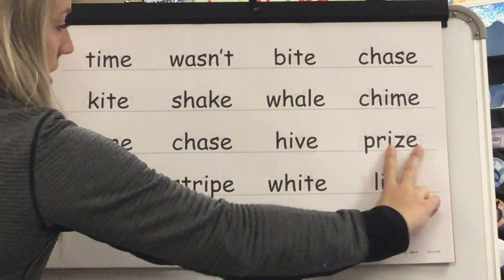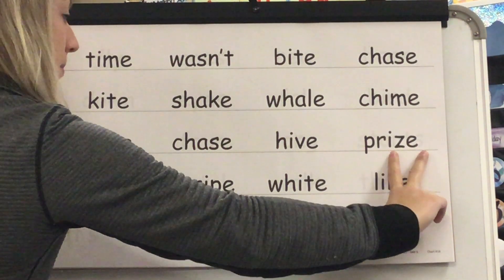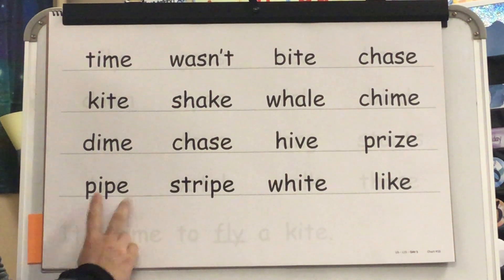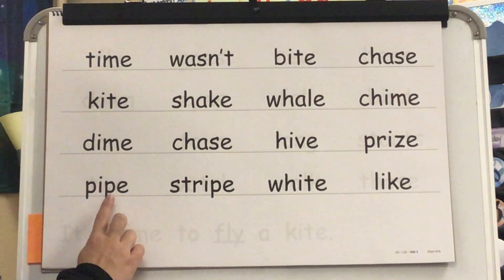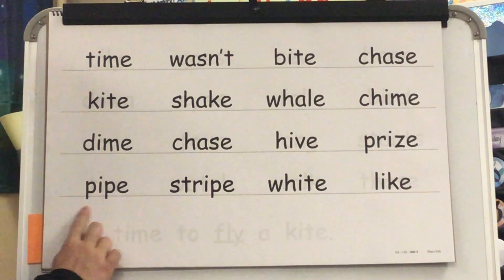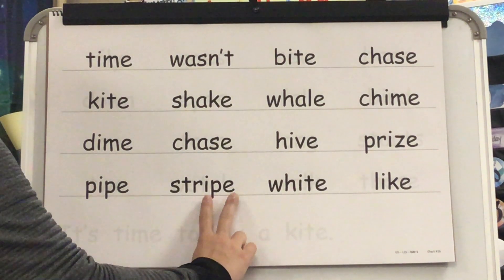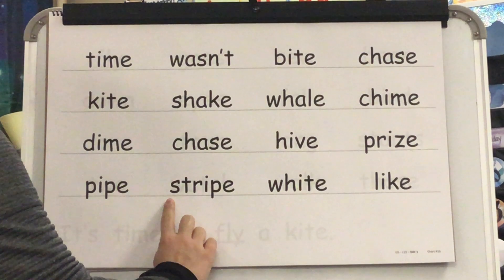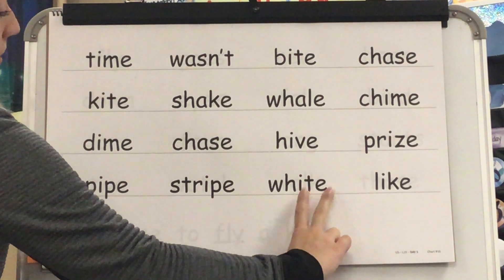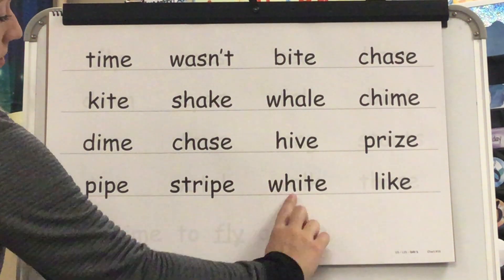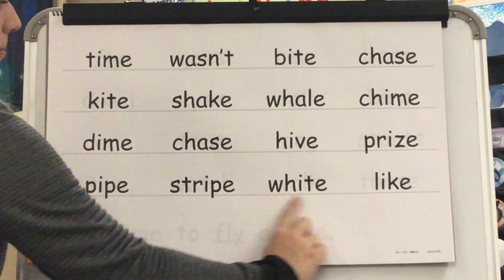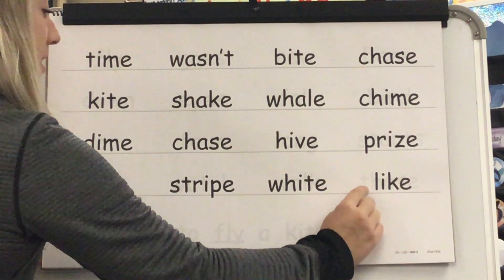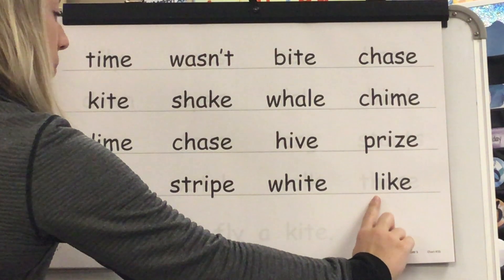Sound: I. Blend: P. -ipe. Word? Pipe. Sound: I. Blend: Str-ipe. Word? Stripe. Sound: I. Blend: W. -ite. Word? White. Sound: I. Blend: L. -ike. Word? Like. Great job.